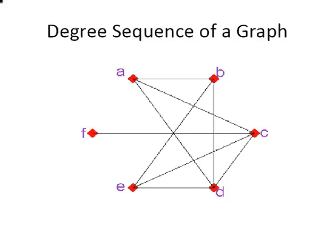So here we go. We have a graph here in front of us with six vertices: a, b, c, d, e, and f, and we have numerous edges on this graph.